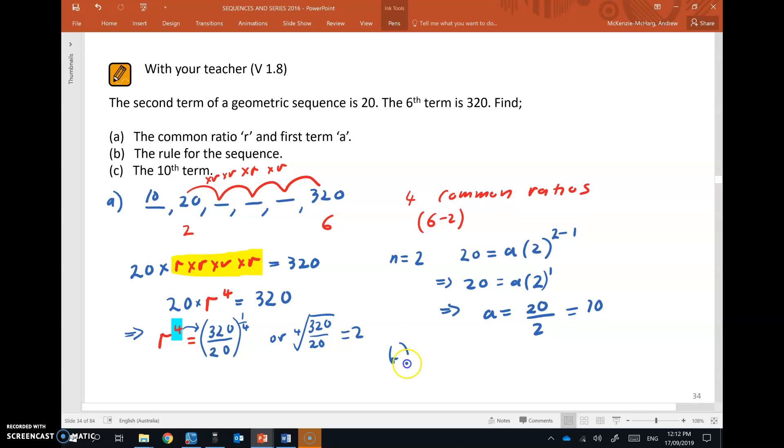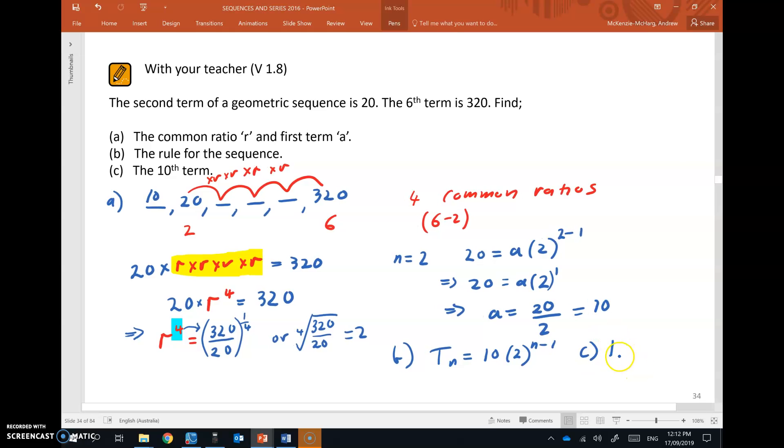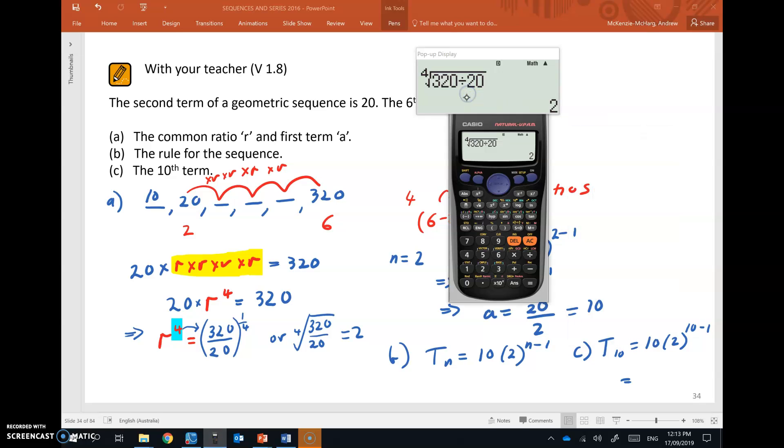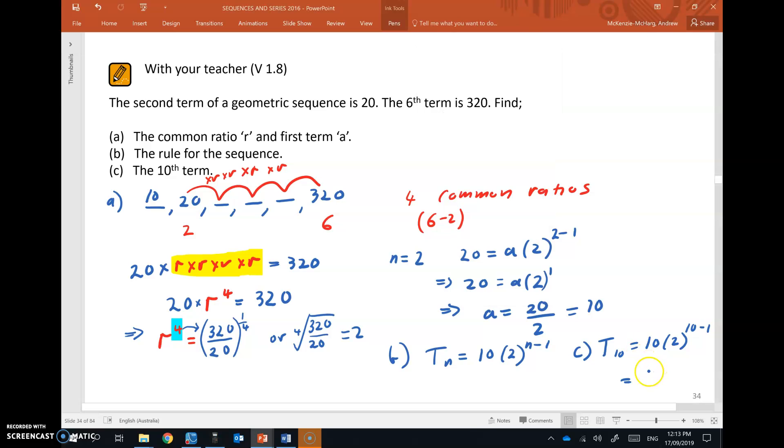So the rule for the sequence then, we just write it out with those two numbers there, where we've got the a value is 10 and the common ratio is 2 to the n take 1. So in part c, the 10th term of this sequence, t10 equals 10 by 2 to the 10 take 1, which will become 9. So that gives us 10 bracket 2 to the power of 9, which is 5,120. And there's part c.